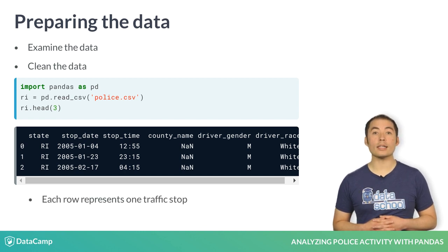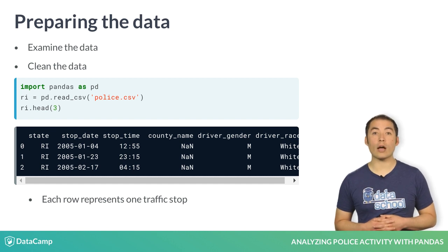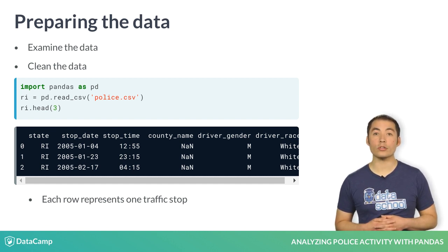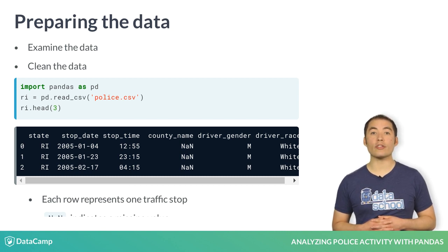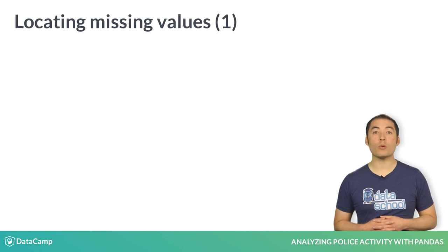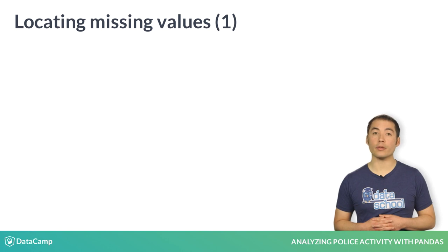Each row represents a single traffic stop. You'll notice that the county_name column contains NaN values, which indicate missing values. These are often values that were not collected during the data gathering process, or are irrelevant for that particular row. It's important that you locate missing values so that you can proactively decide how to handle them.